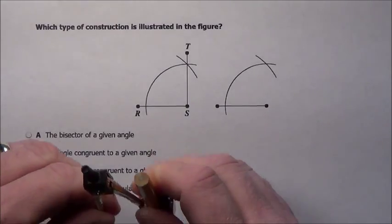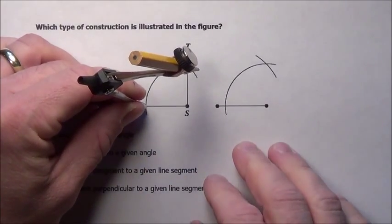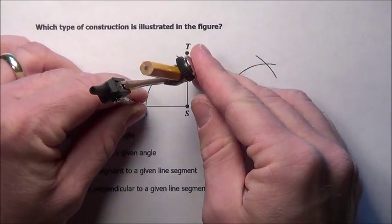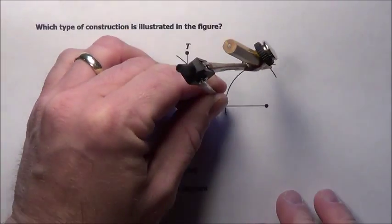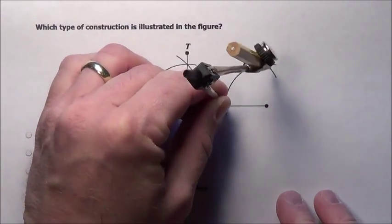They then simply put this on a point which in this case they probably put it right here at that intersection piece, made a mark, put it at the intersection piece, made a mark.